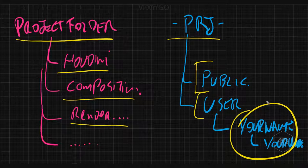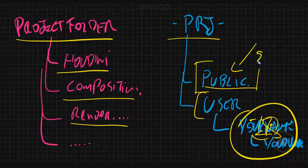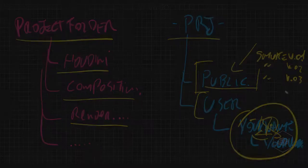In the user folder it's more chaotic — you can put everything there: references, whatever you want. But the public folder is more ordered, because you can find, for example, the smoke version 01, version 02, version 03, etc. There is more order in that way.